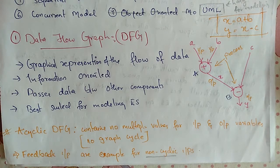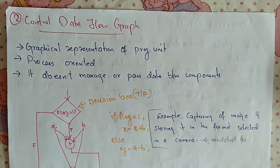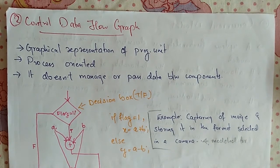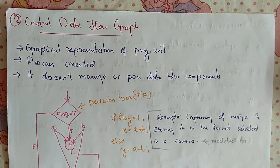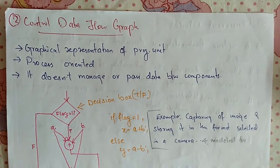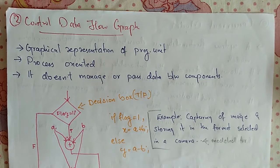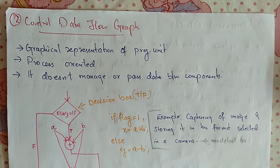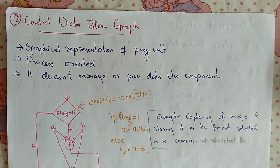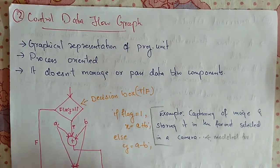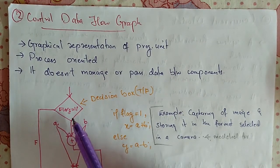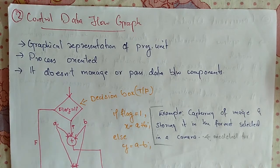Next, we'll see the control data flow graph. This is similar to the data flow graph, but here we have a condition box. It is a graphical representation of a program unit, process-oriented, and it doesn't manage or pass data between components directly. The key difference from the data flow graph is the presence of a decision box.